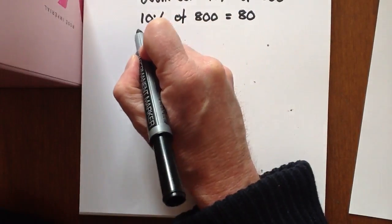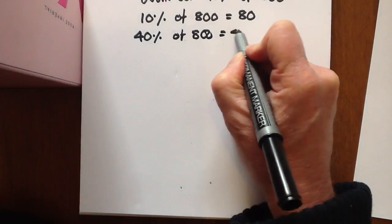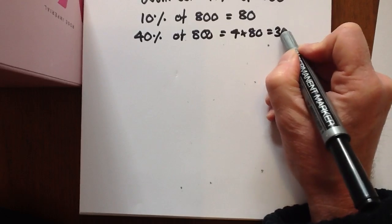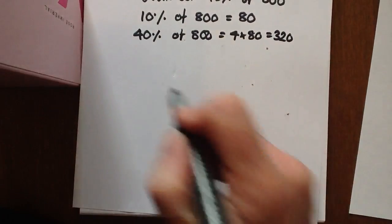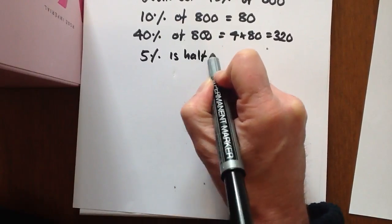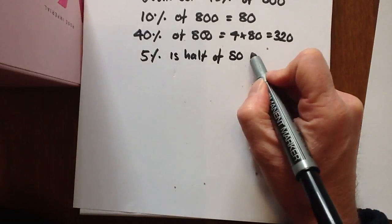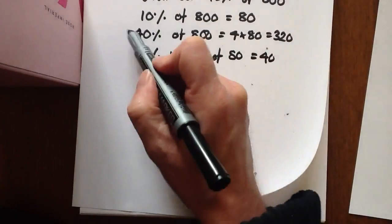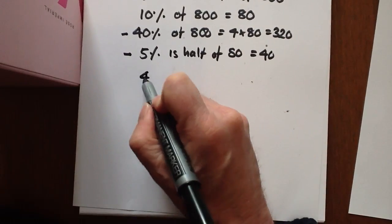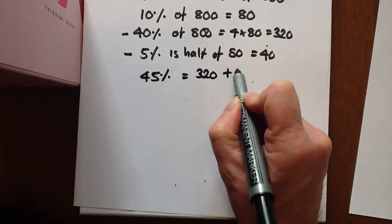40% will be 4 times 10%, so 4 times 80 is 320. The 5% is half of 10%, which was 80, so 5% is half of 80, which is 40. So 45% will equal 320 plus 40, which is 360.